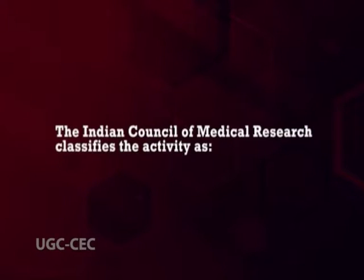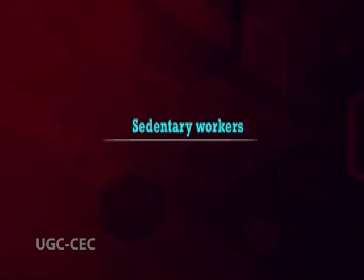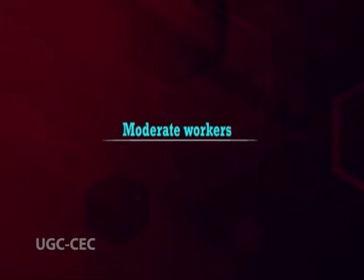The Indian Council of Medical Research classifies activity as follows. First, sedentary workers: those who sit and work using brain and hands — for example, teachers, clerks, typists, and officers. Next, moderate workers: those who work vigorously for a few hours using many parts of the body like hands, feet, and muscles — examples include postmen, housewives doing all housework. Heavy workers: those who use different parts of the body for several hours — examples include rickshaw pullers, coolies, workers in mines, and sports persons.